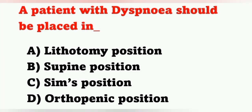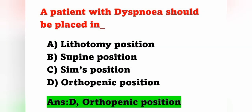Next question: a patient with dyspnea should be placed in — options: A) lithotomy position, B) supine position, C) Sims' position, D) orthopneic position. Dyspnea means difficulty in breathing. The patient should be placed in orthopneic position, meaning upright position. Option D is the correct answer.